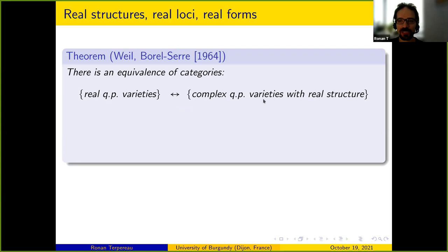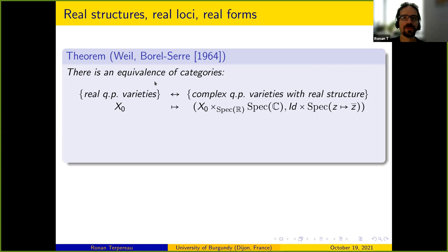How does it go? If you start with X0, a real variety, you can always complexify — you do a base change at the level of scalars and get a complex variety. But this complex variety does not come alone; it comes with a real structure, which is simply the one induced by complex conjugation on the second factor.